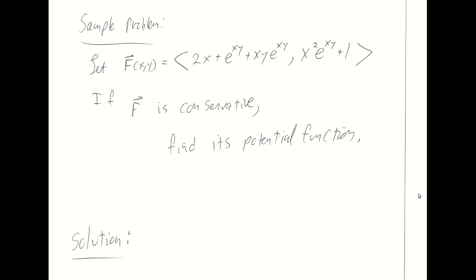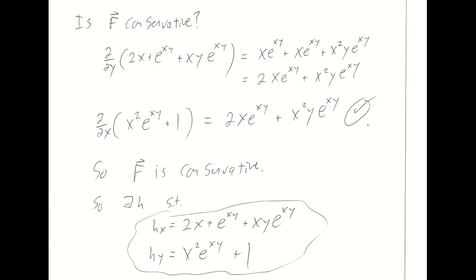Let's have you do one of these. Here is a vector field — if it is a conservative vector field, find its potential function. Go ahead and pause the video. I definitely encourage you to look back at the list of steps we've outlined and also look at the examples. It's not unlikely that you might have some difficulty with the sample problem. Please give it some thought — we'll have homework problems on this for more practice. Look at the examples and the list of steps to try to help you get through this.